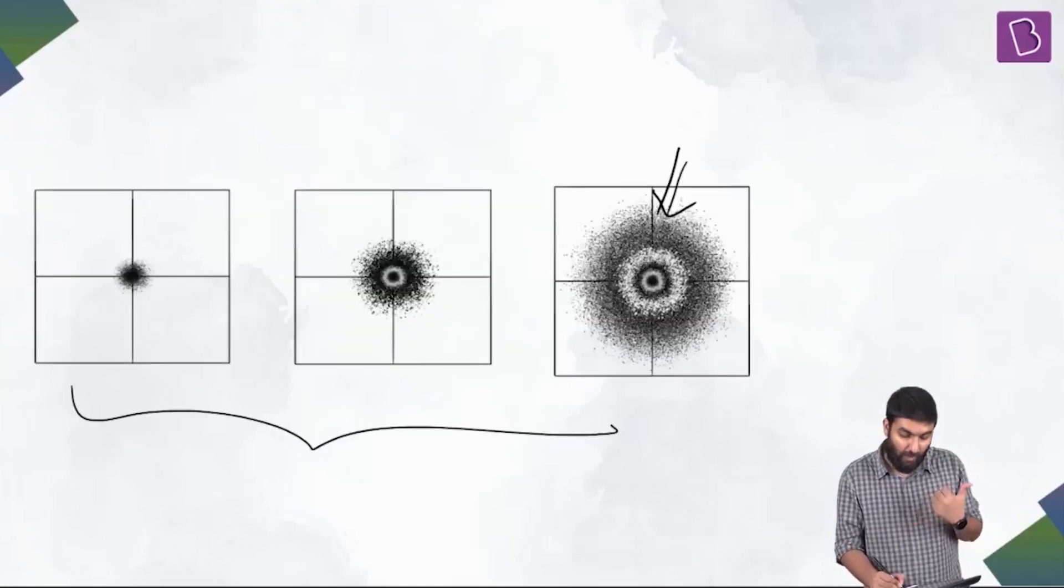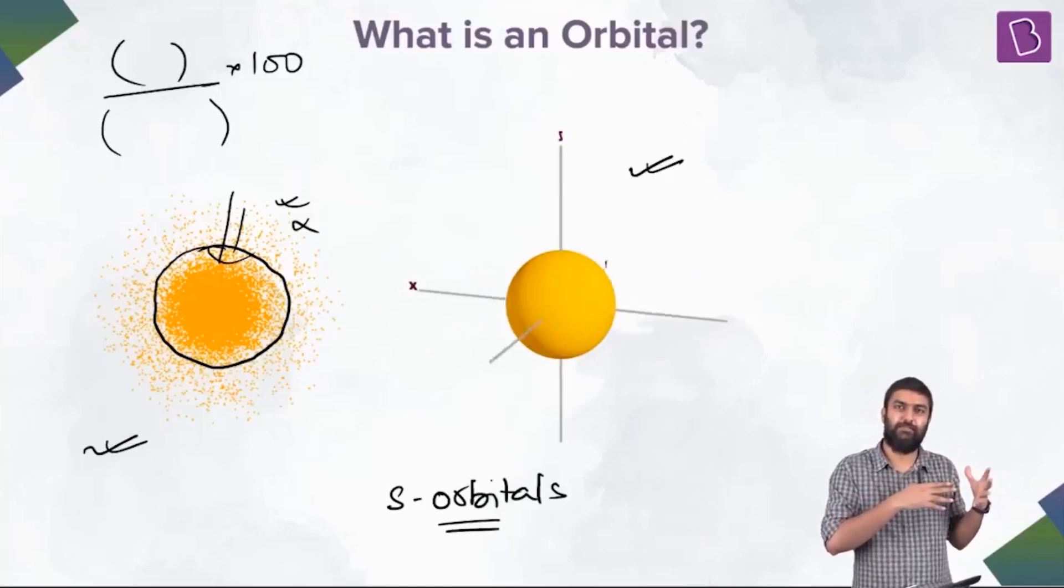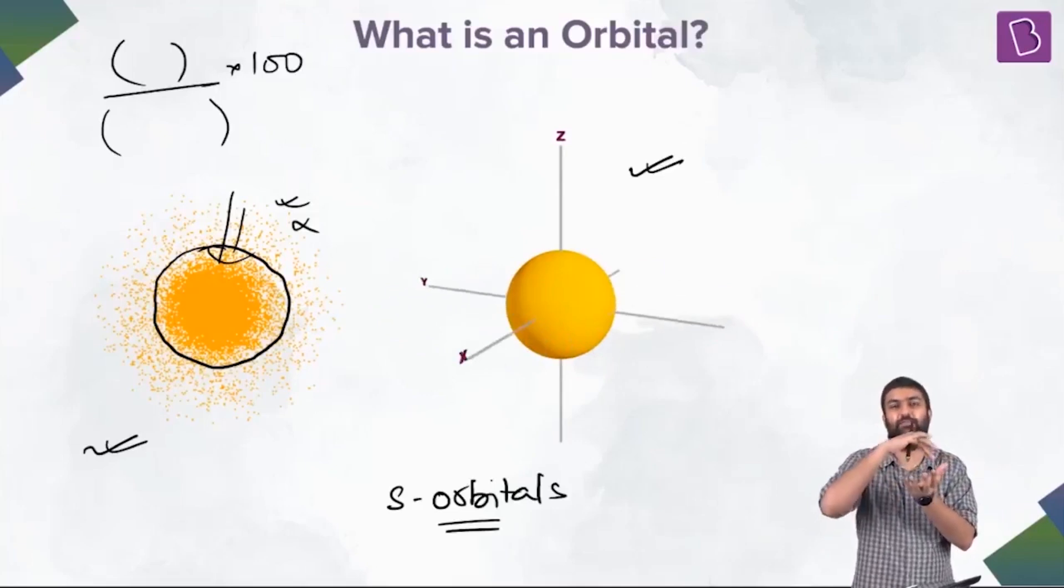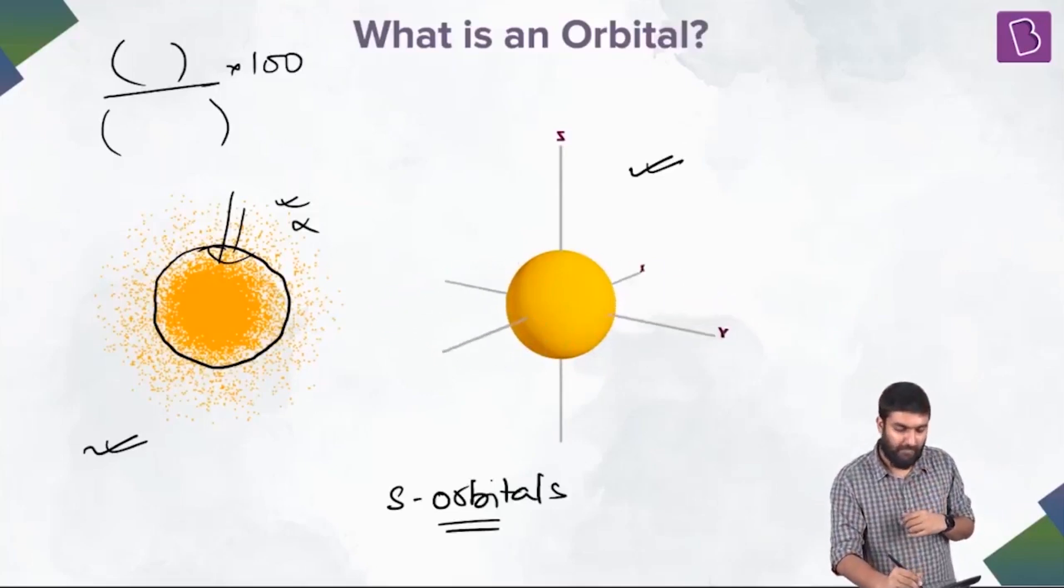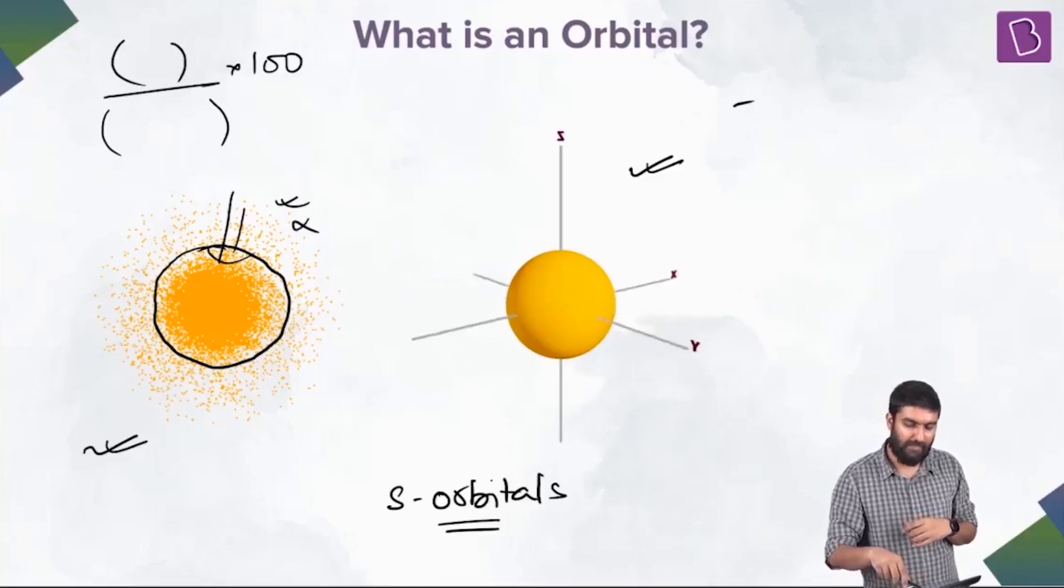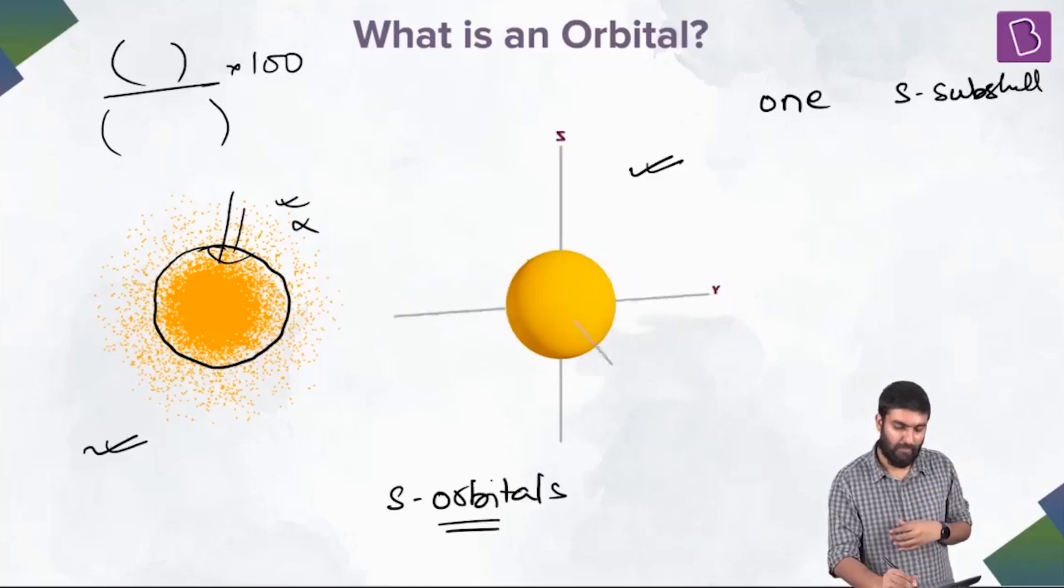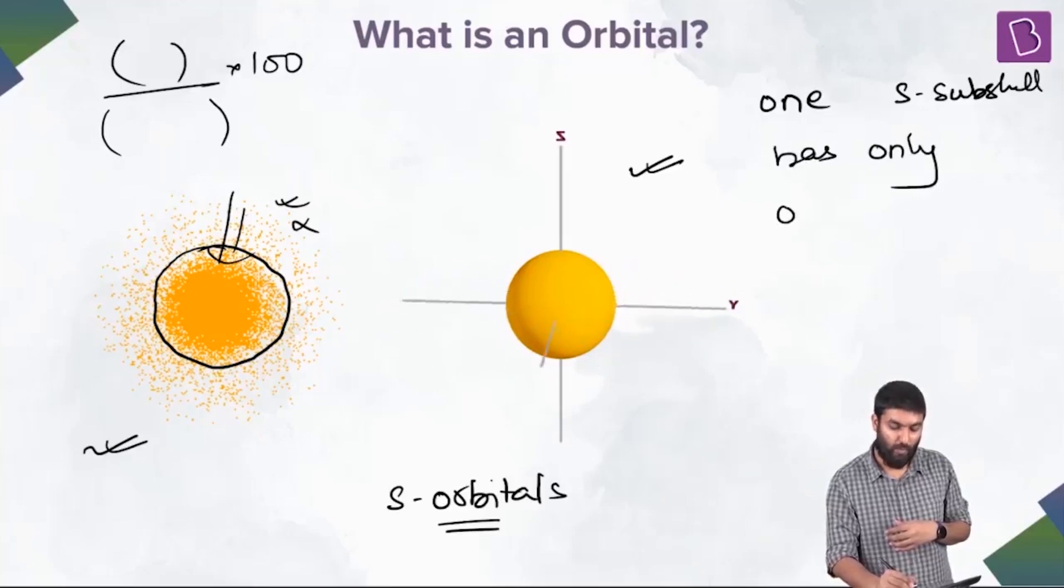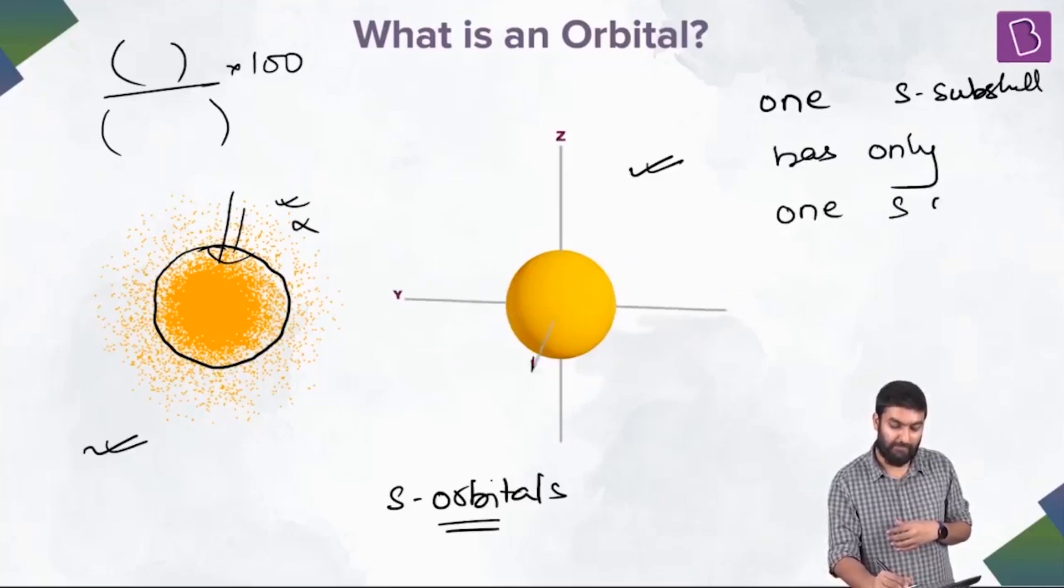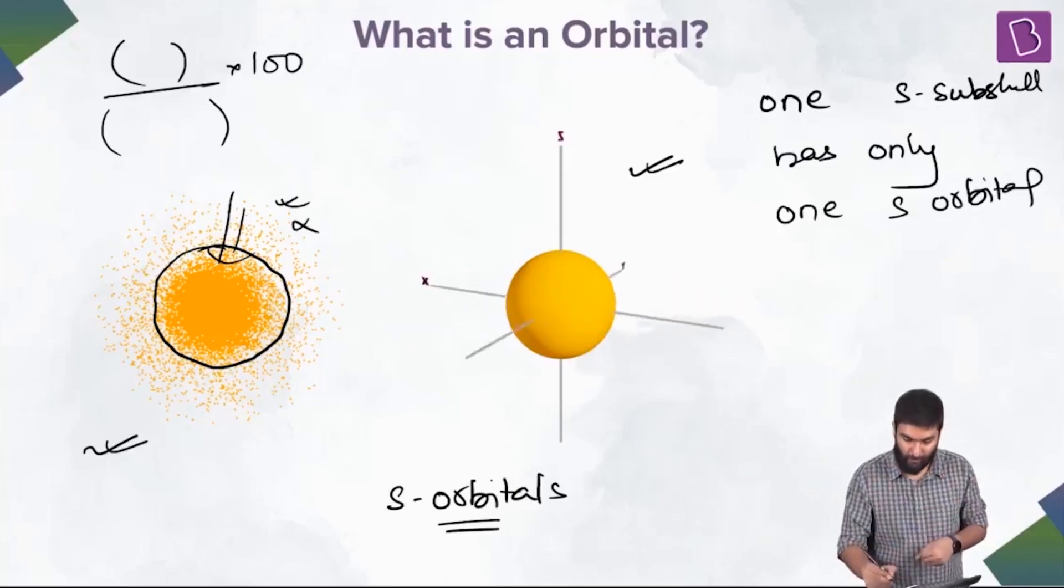Now, if you combine px, py, and pz, you get a p-sub shell. There is a tiny bit of detailing here that I have to mention, but that I will come to later on. On the contrary here, in s, you do not have different type of s. Since it's uniform in all directions, we have only one thing. One s-sub shell has only one s orbital. Keep that in mind.